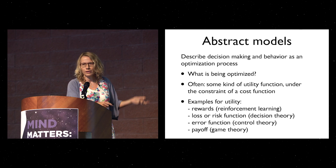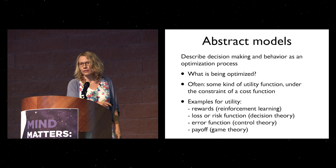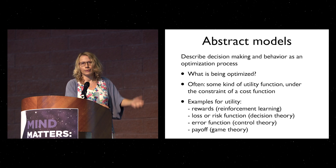This pertains to many areas. In machine learning, you have reinforcement learning, where the utility is encoded in a reward function. In decision theory, you have a loss or risk function. In control theory, the same thing is called an error function. In game theory, you have a payoff matrix. The problem I see with this way of modeling things is that you have to come up with this utility function — you have to specify it mathematically — and that's not trivial. There are many, many ways to do it, and many that are reasonable, depending on context.